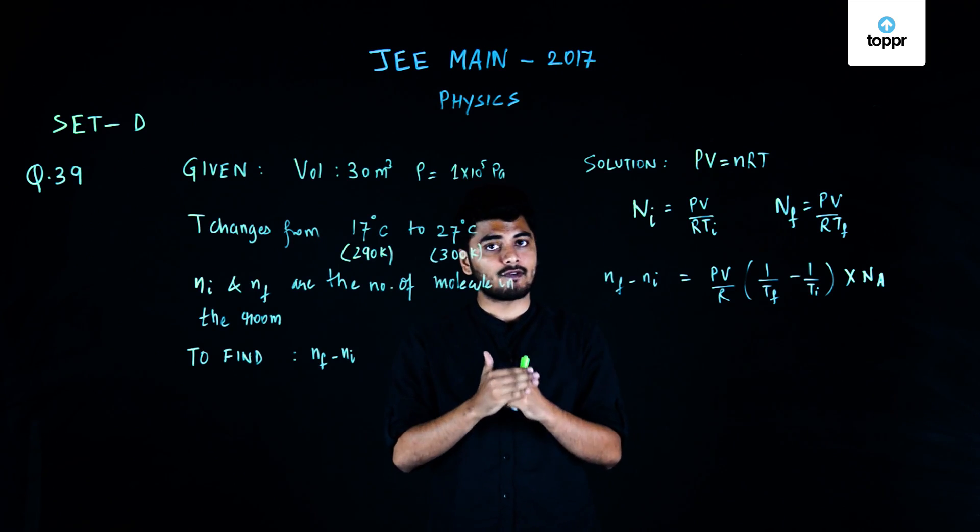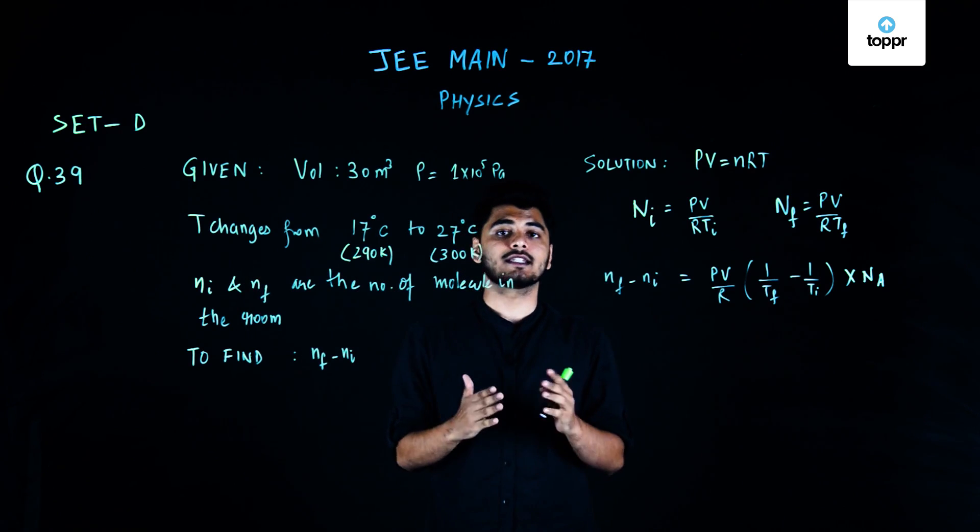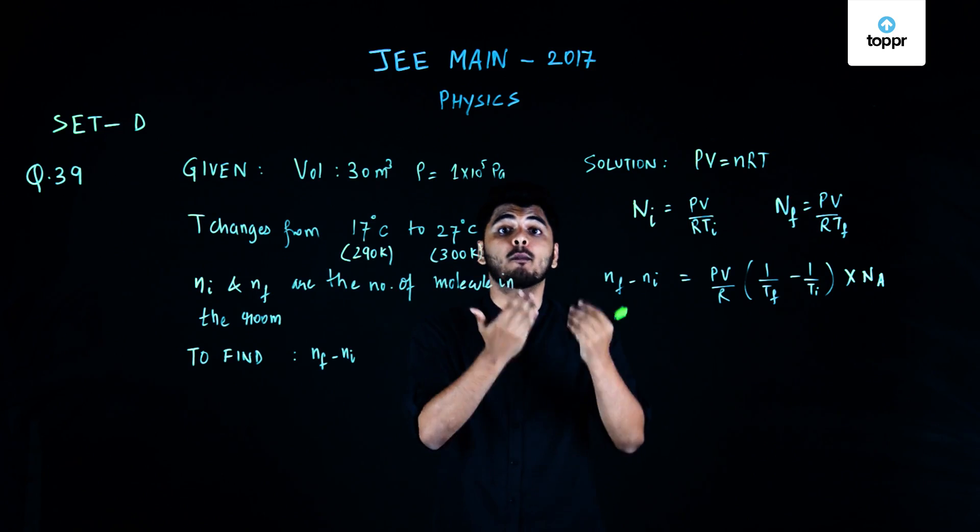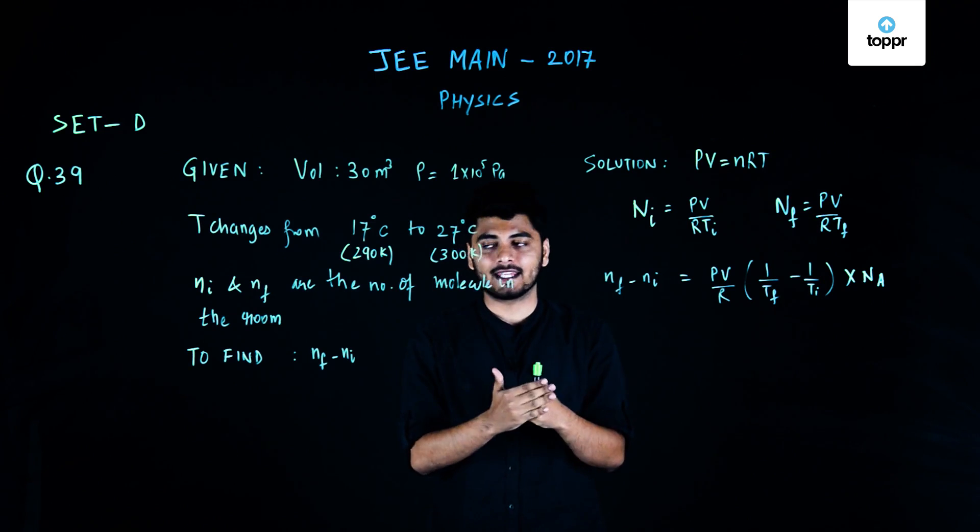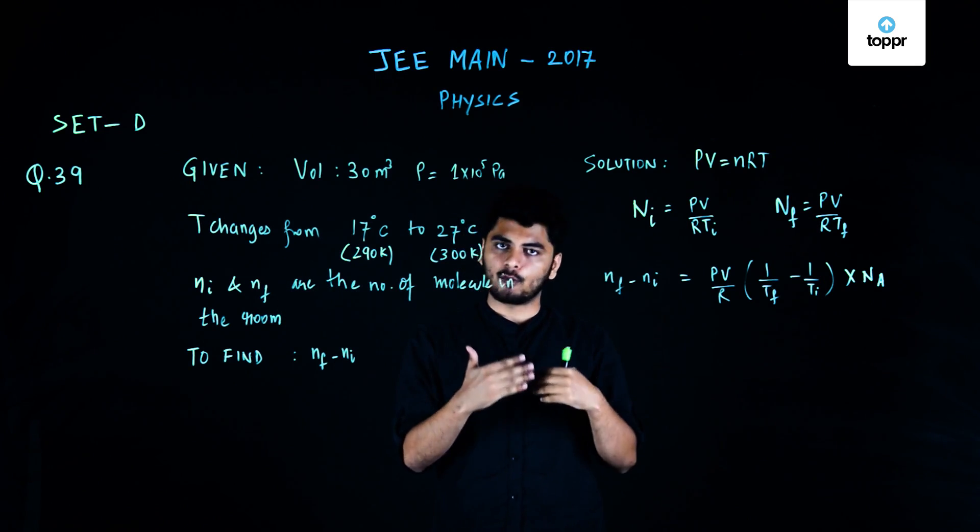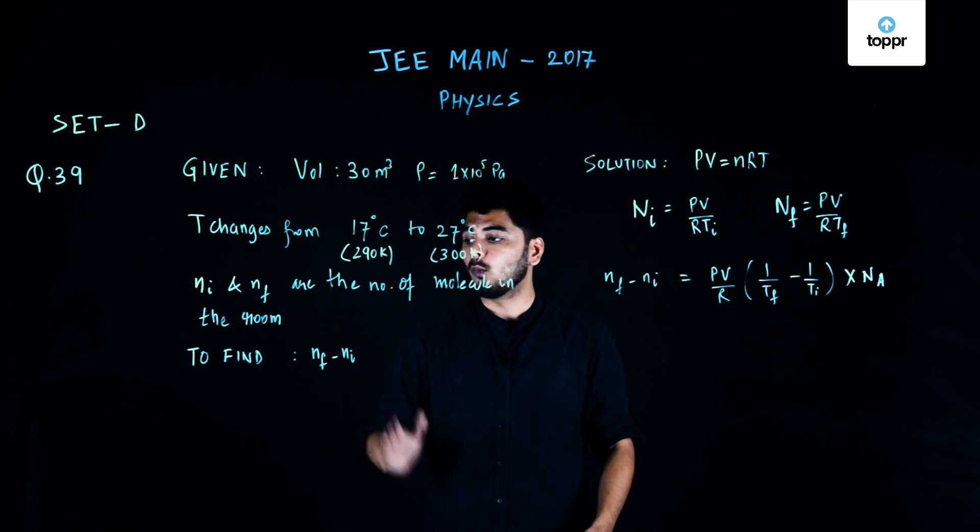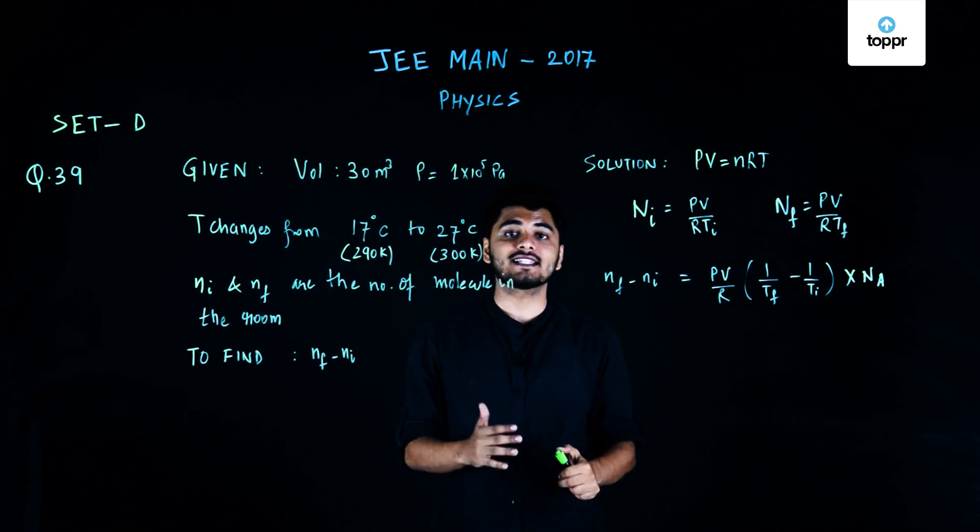In this question we have been asked to find out if Ni is the initial number of molecules in the room before the sunshine or before the heating and NF is the final number of molecules in the room after the heating, what is the value of NF minus Ni?